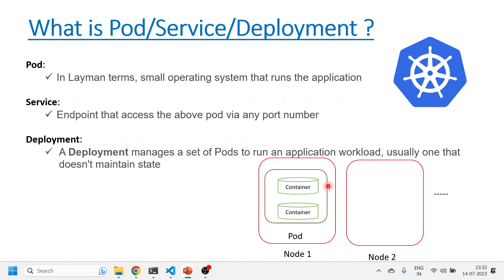We'll cover pod, service, and container deployments — quick theoretical aspects. Whenever we deploy anything onto the Kubernetes cluster, consider it in layman terms as a very high-performance machine — like a Windows machine that can scale up to 100 GB of RAM or scale down to 2 GB of RAM. It's a big operating system that can scale up and down as per need. That is a Kubernetes cluster.